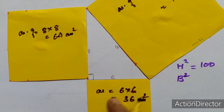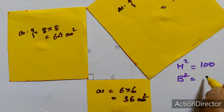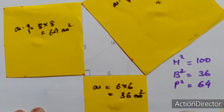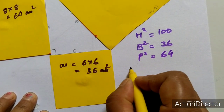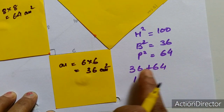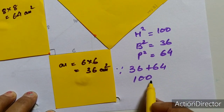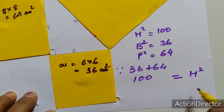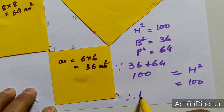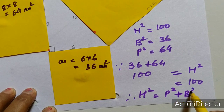Either you can take this as base or this as base, because both lines are perpendicular to each other. So base square is 36 and perpendicular square is 64. Now I am going to check whether 36 plus 64 is equal to 100 or not. Since 36 plus 64 is equal to 100, that is equal to the hypotenuse square, which was also 100 cm square. So finally we can say: hypotenuse square is equal to perpendicular square plus base square.